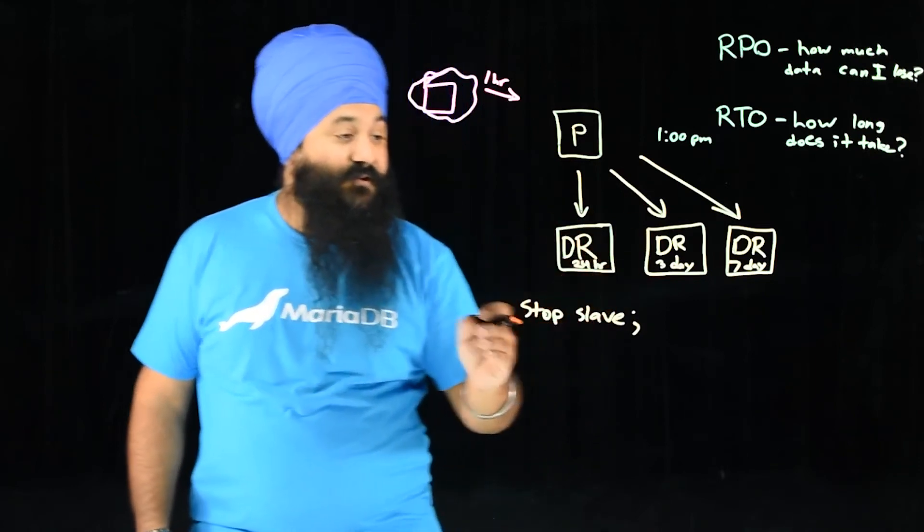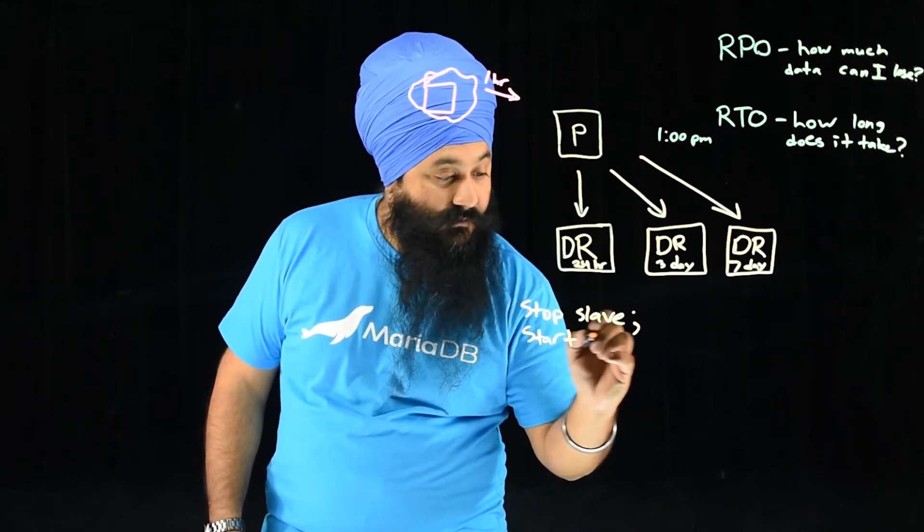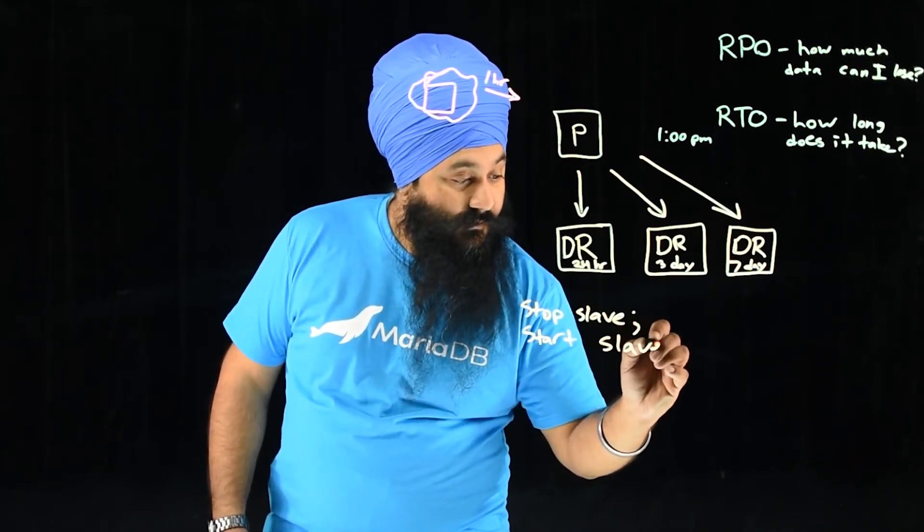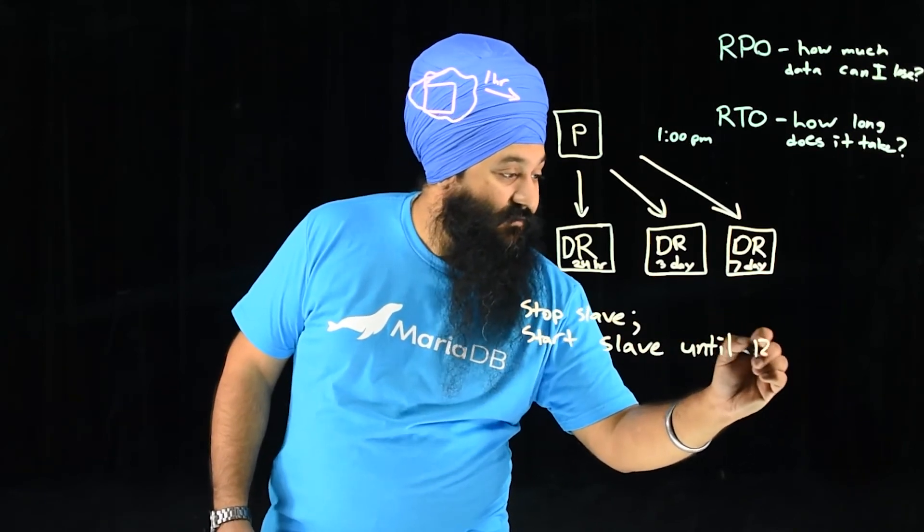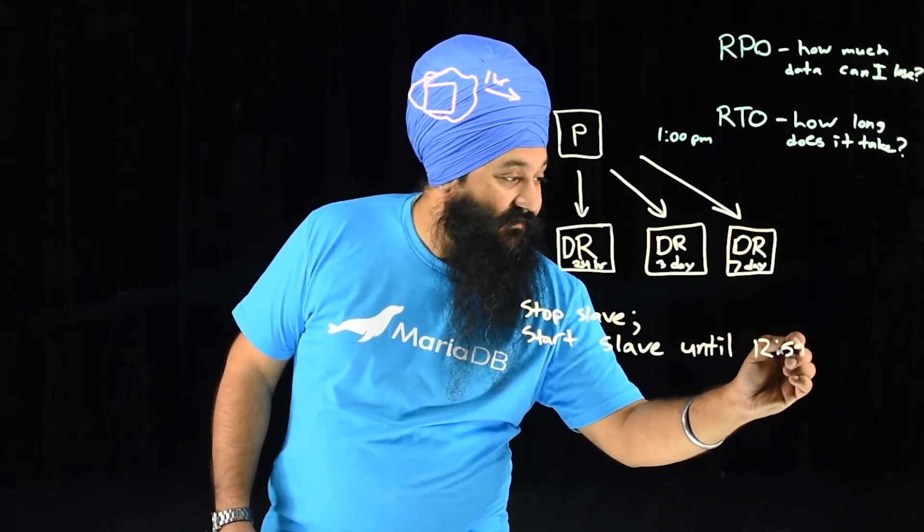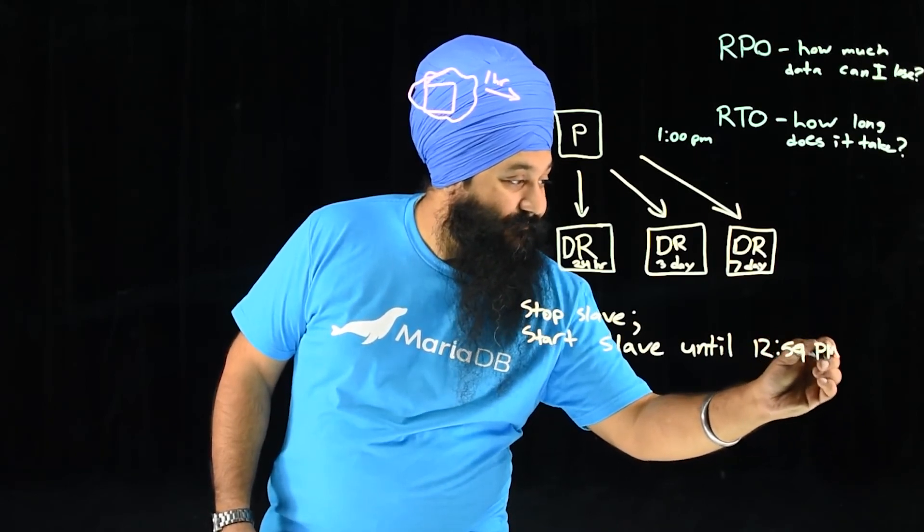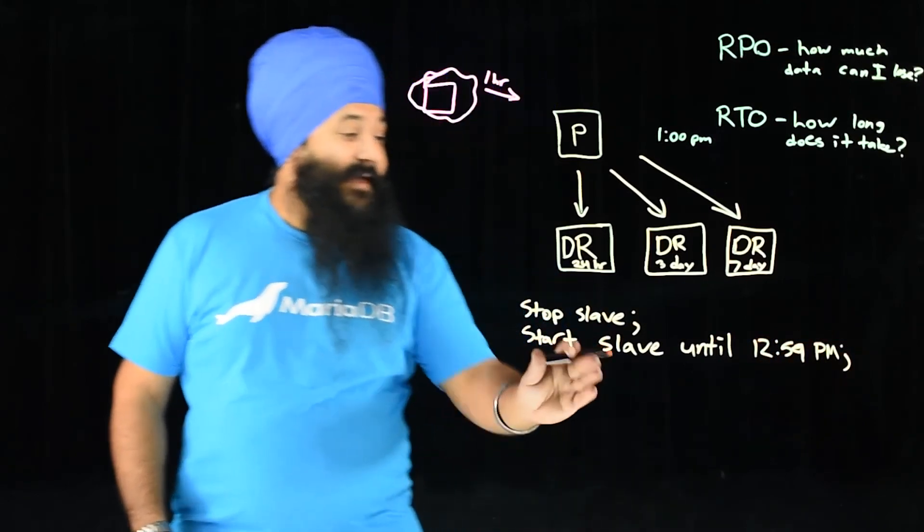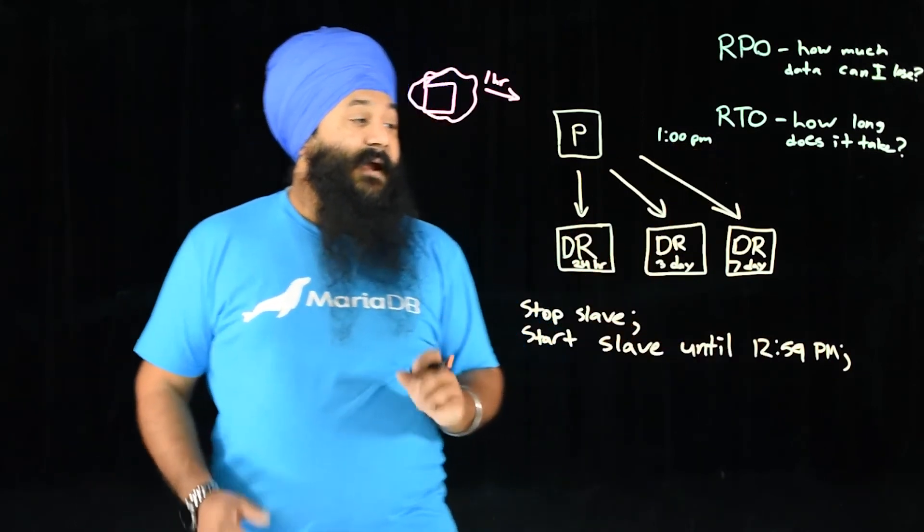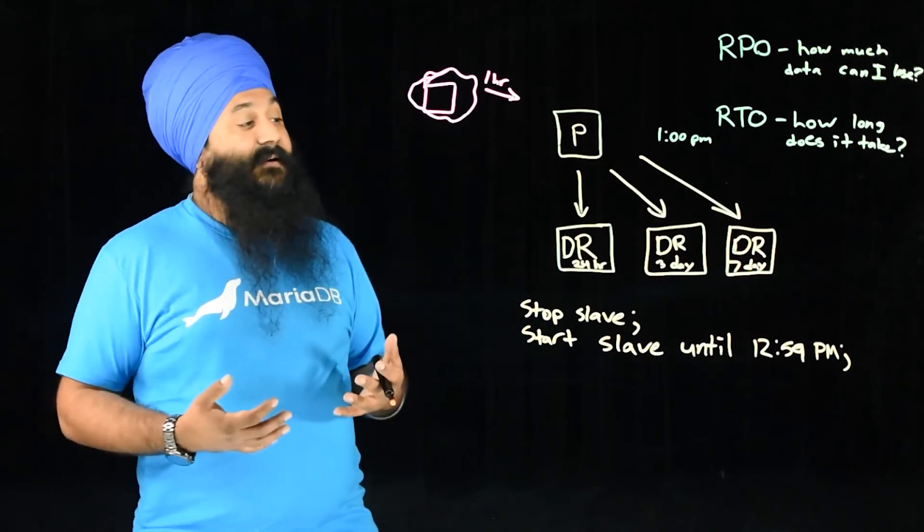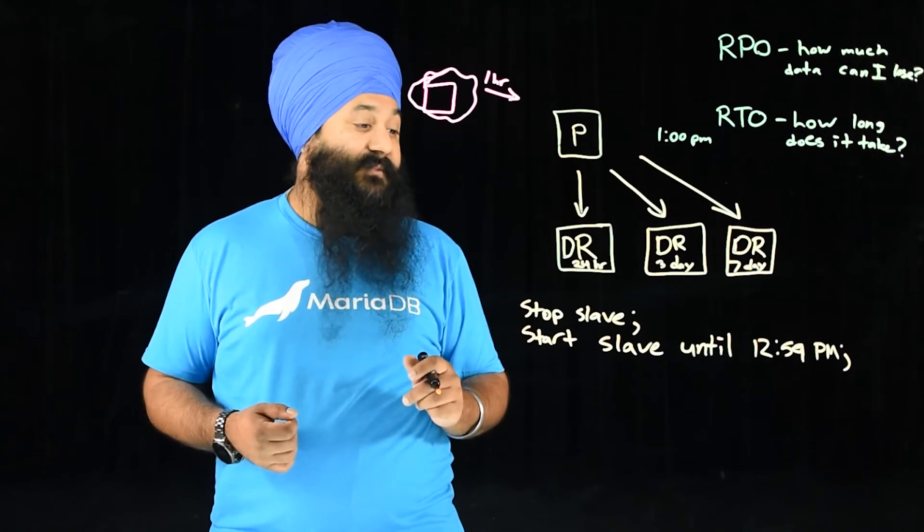So what we do, and that application process is basically what's delayed. And we say start slave until, and in this case we'll say 12:59. And again, this is slightly pseudocode, but we'll say 12:59 PM. And that means play everything up to the point right before failure. And again, with the binary log granularity, you can actually do it right until the transaction right before the drop table.